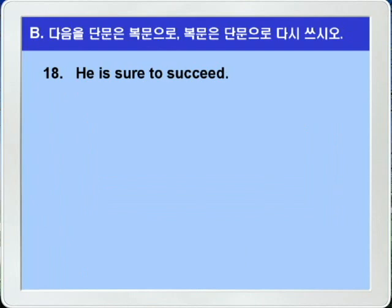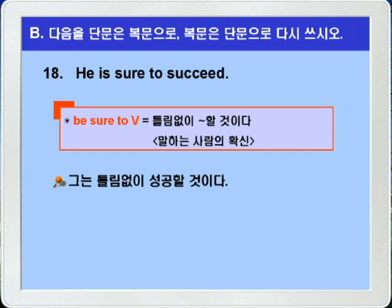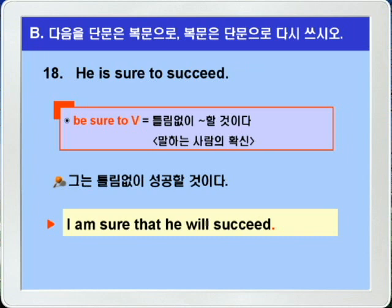18번. 'He is sure to succeed.' Be sure to 부정사하면 틀림없이 뭐뭐 할 것이다라는 뜻입니다. 이것은 말하는 사람의 확신을 나타내는 표현이니까, 'He is sure to succeed'는 'I am sure that he will succeed'와 같은 말입니다. 그는 틀림없이 성공할 것이다.